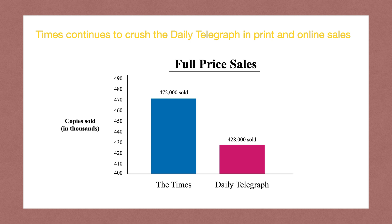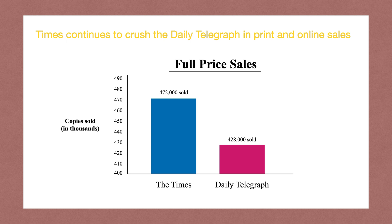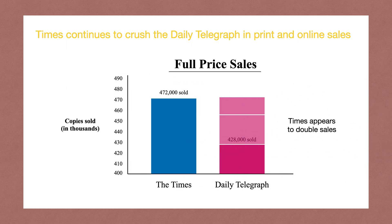The graph shows full price sales with the y-axis in copies sold in thousands. The Times is in blue and the Daily Telegraph in pink. The eye test tells us the Times is absolutely crushing the Daily Telegraph — it looks like more than doubled in sales. But if you look at where the axis starts, it starts at 400,000 copies sold instead of zero, making that distance seem much larger than it really is.